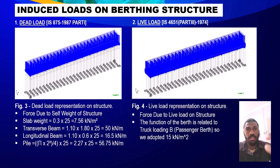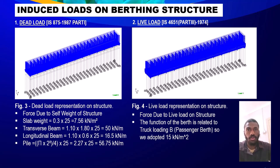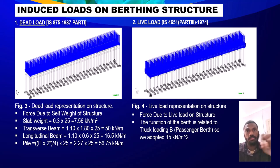The first load to consider is the dead load — loads that remain throughout the lifespan of the structure itself. In our case, the dead loads include the slab weight with a uniform load of 7.56 kN per meter squared, the transverse beam of 50 kN per meter, a longitudinal beam of 16.5 kN per meter, and a pile of 56.25 kN per meter. Those are the dead loads that we have to consider in the design.